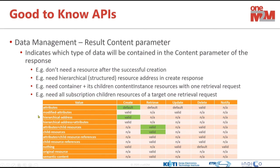When you create a resource, you can get the resource representation when you set attributes. But if you use the hierarchical address option — the structured resource ID, like home/room/date/something — when creating a resource, instead of the full resource representation, you can just get that structured resource identifier using this result content parameter option. For all details, please refer to the specification.